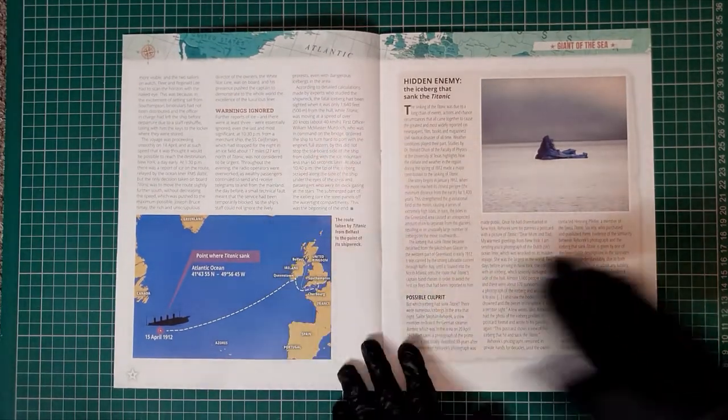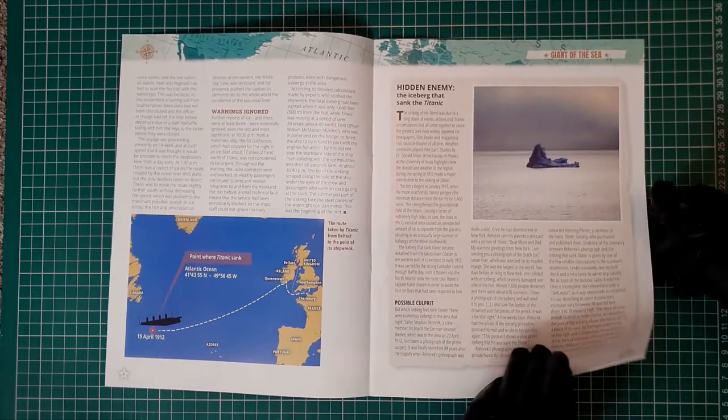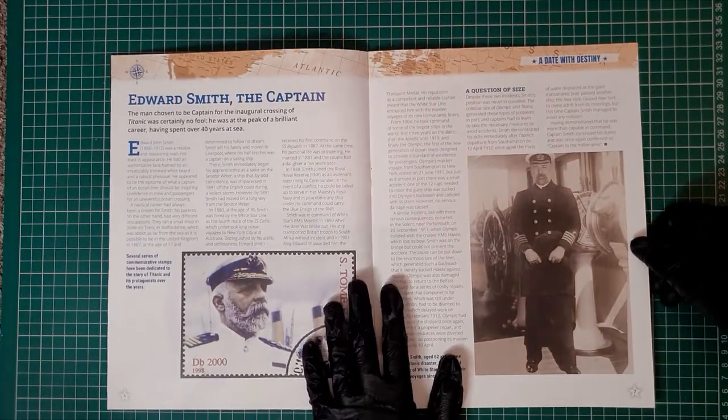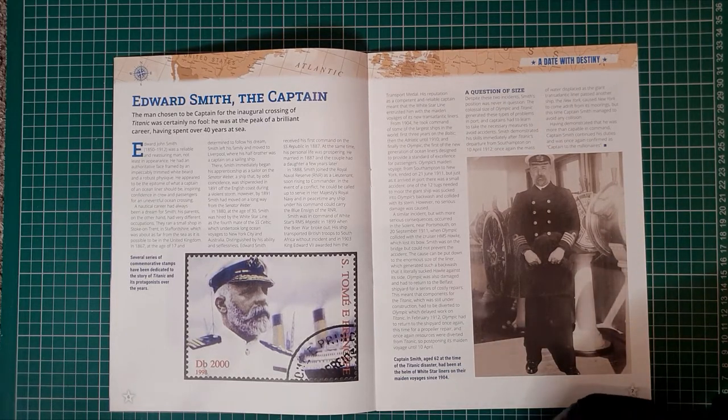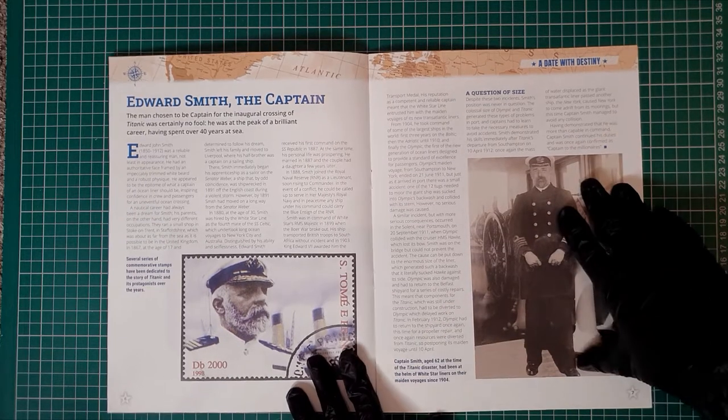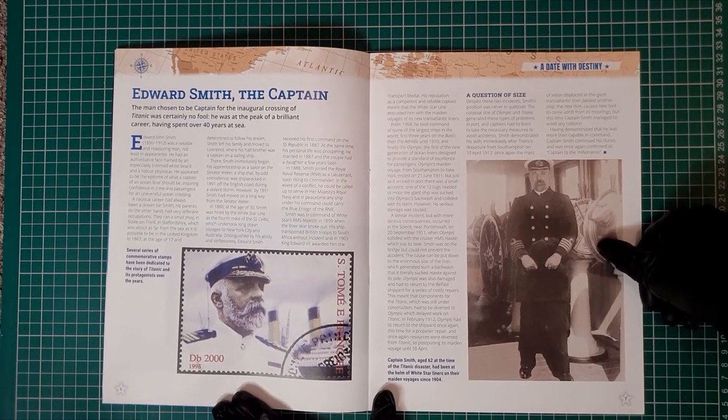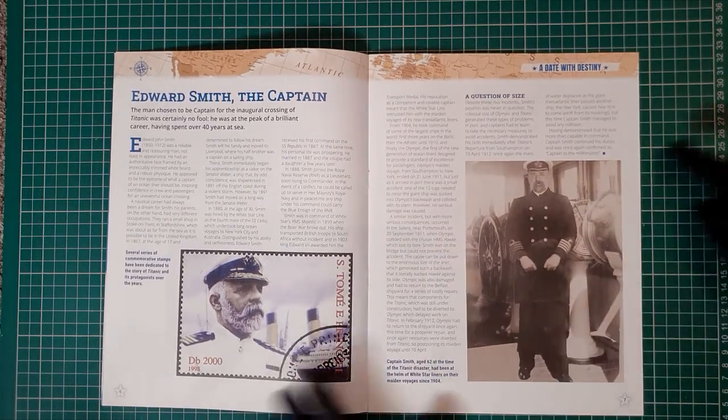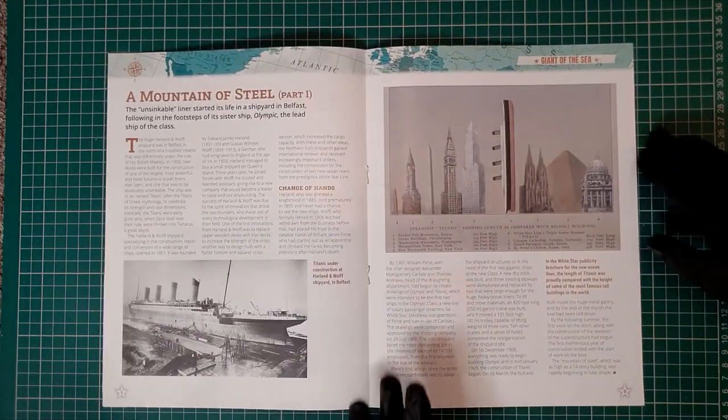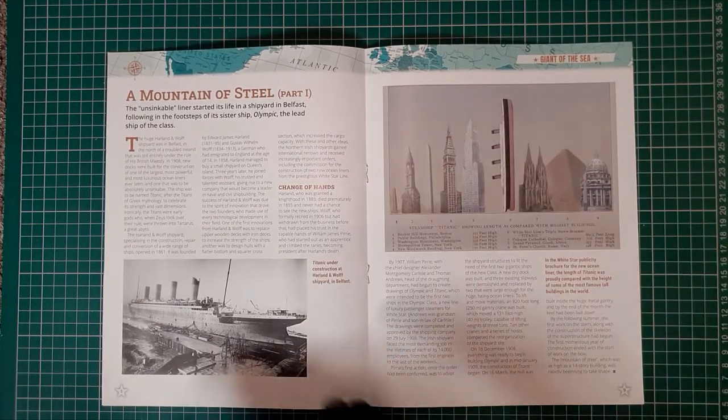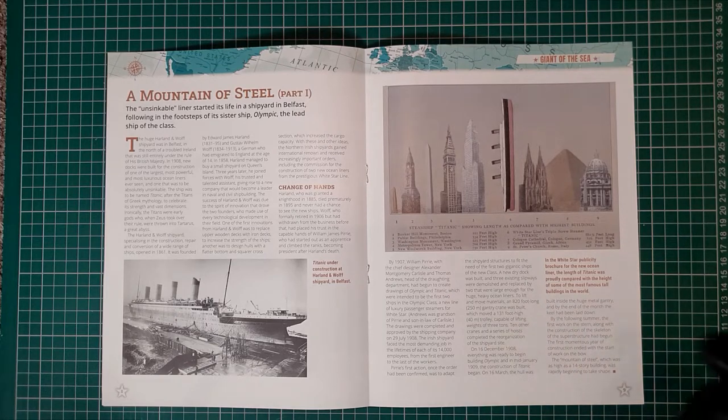More information about the Titanic, the route it went, the iceberg. We have a little character study here of Edward Smith, the Captain, who was born actually in my hometown, Stoke-on-Trent. I've been to actually the place he was born. There's some nice little history here about how he served. Mountain of Steel, which is part one, just explains how big the unsinkable liner was, how it started and the whole story about Olympic.